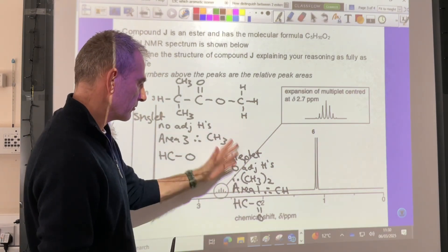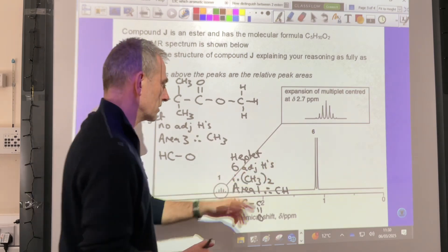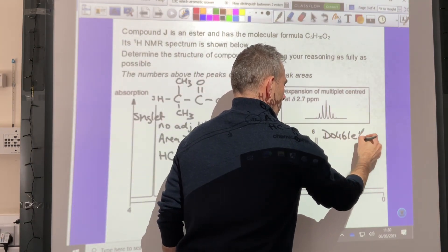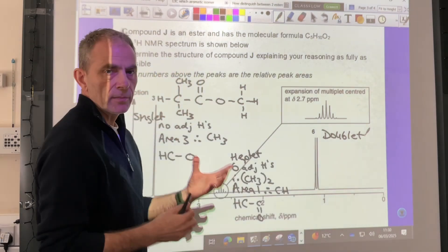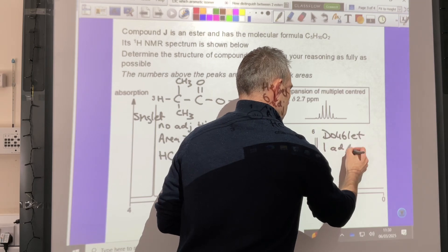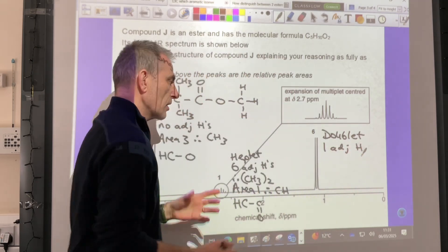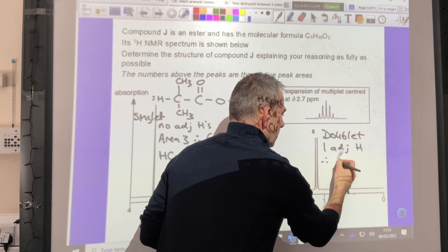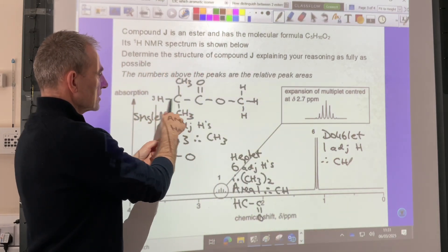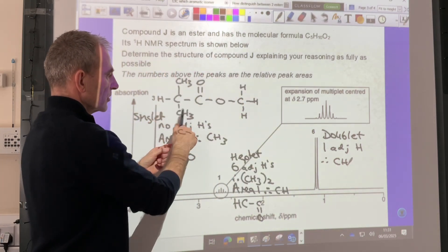So again, we're just going to do the same 3 things. So what type of signal is it? It's a doublet. What does a doublet mean? It means there's one adjacent proton, 1 adjacent H. So therefore, what's adjacent? It's a CH that's adjacent. Obviously, we know we've got a CH adjacent to these protons here.